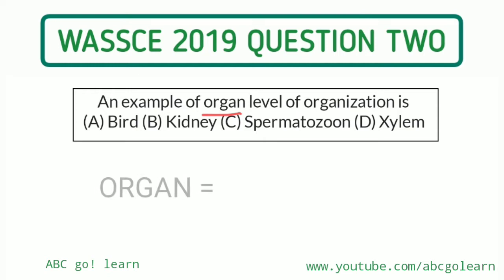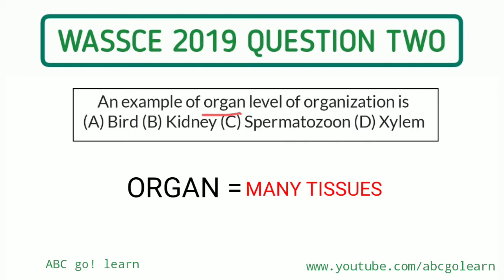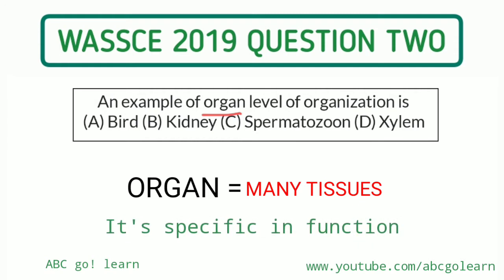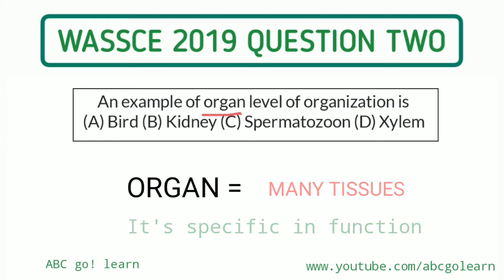An organ is a collection of tissues — many tissues coming together to perform a specific function. So when you are looking at a bird, a bird is not an organ. It is a typical example of an organism, not an organ at all. But when you're talking about kidney, kidney is an organ.